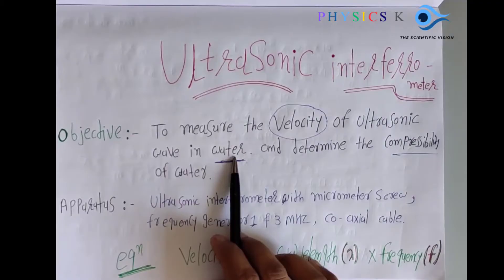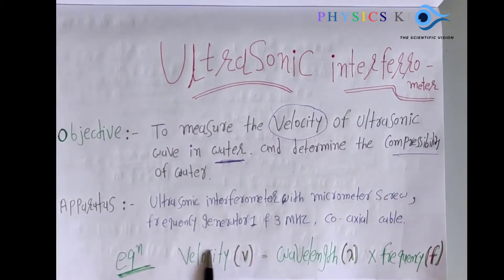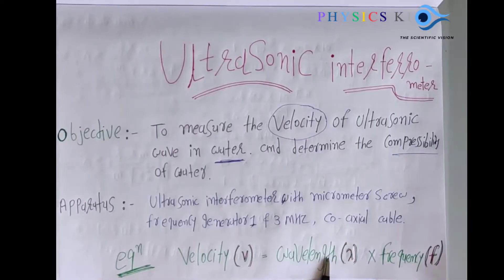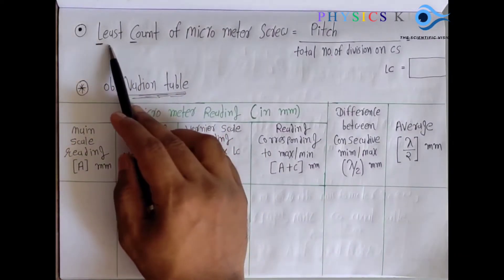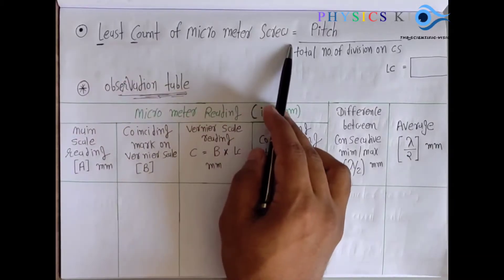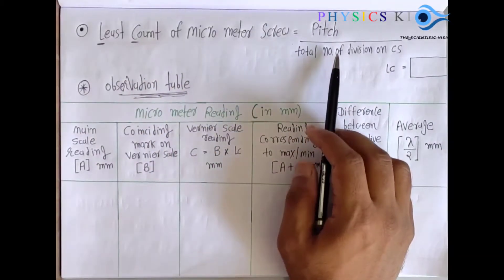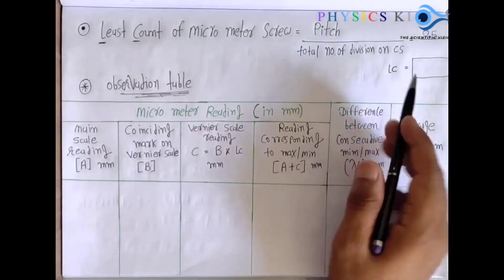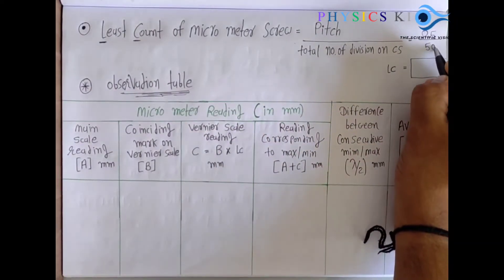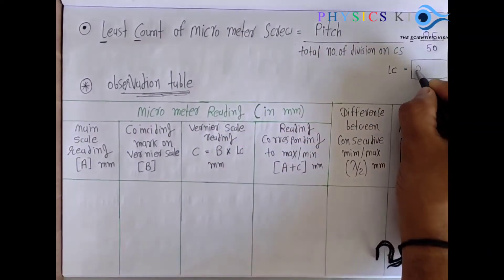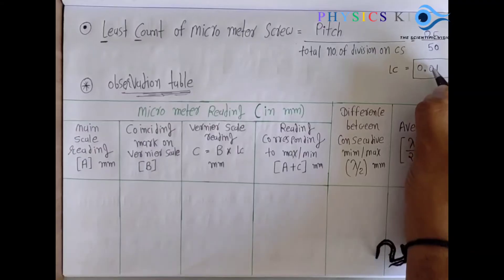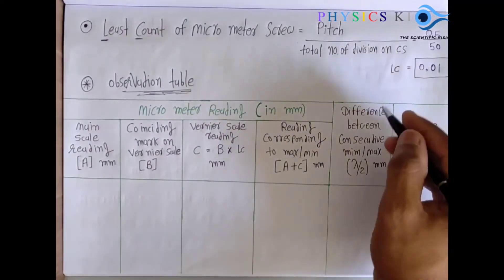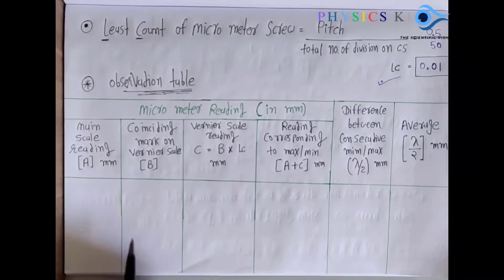The simple terminology: velocity equals wavelength multiplied by frequency. We already know the ultrasonic frequency and we have to find the wavelength. First, let's find the least count of the micrometer screw. The formula is pitch divided by total number on circular scale. The pitch is 0.5 mm and total circular scale divisions are 50, so 0.5 divided by 50 equals 0.01 mm. The least count (LC) is 0.01 mm.